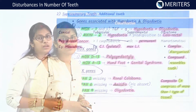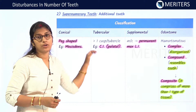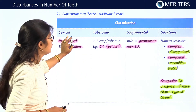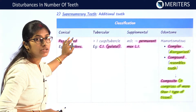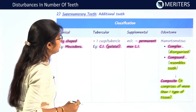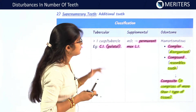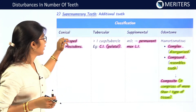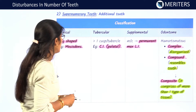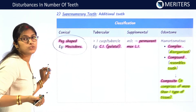Now we will discuss supernumerary teeth — another disturbance in number of teeth. These are additional teeth, also known as supernumerary teeth. Supernumerary teeth can be classified into four types: conical, tubercular, supplemental, and odontome.